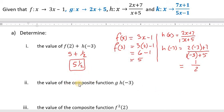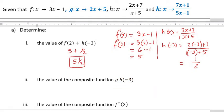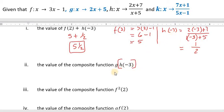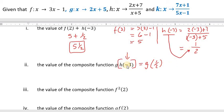Now we want to work out the value of the composite function g of h of negative 3. We recall that we already worked out h of negative 3, and h of negative 3 is a half. So what we're really working out is g of a half — replacing h of negative 3 with a half, we're finding g of a half.